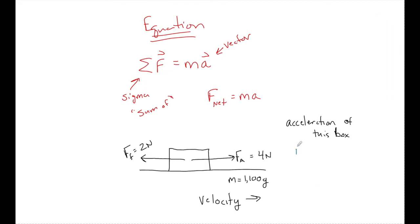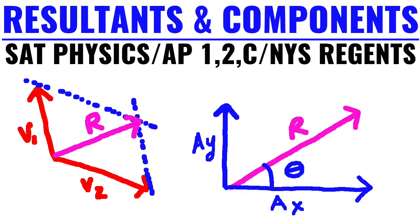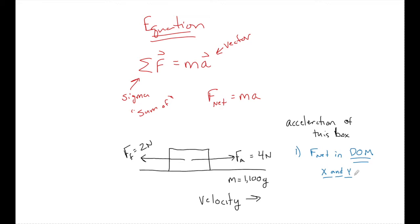First, I must find the F net in the direction of motion, and I usually call this DOM. So if you watch me throughout this year, I call the direction of motion DOM. And when I say the direction of motion, I want to be specific to the X and Y directions, because if I'm not at an X and Y direction, I must find the components. And you can find out how to find the components if you're not sure using a resultant in my resultants video. I will leave that at the end or in the description.